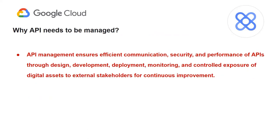Now let's understand why APIs need to be managed. APIs need to be managed to ensure efficient communication between software applications, protect against security threats, and optimize performance. API management involves designing, developing, deploying, and monitoring APIs to ensure they are secure, scalable, and reliable. Effective API management enables organizations to expose their digital assets and services to external developers, partners, and customers in a controlled and secure manner, while also gaining insights into API usage and performance for continuous improvement.